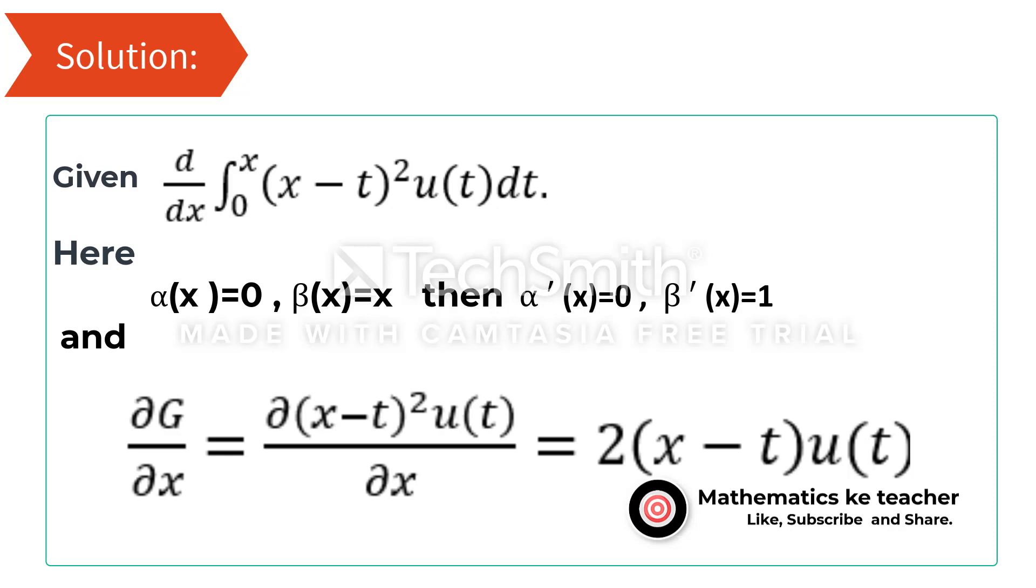Also, the first order derivative of G with respect to x equals 2(x minus t)u(t).